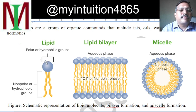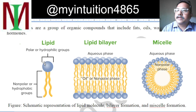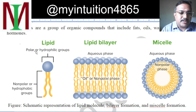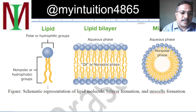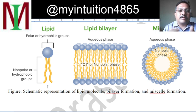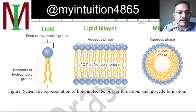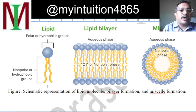The head contains hydrophilic groups — mainly phosphates — which can form hydrogen bonding with water molecules, so we call them polar or hydrophilic. The tails represent the hydrocarbon chains containing only hydrogen and carbon, which have no affinity for water molecules, so we call them non-polar or hydrophobic.